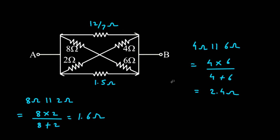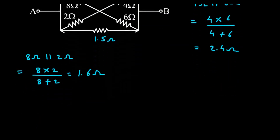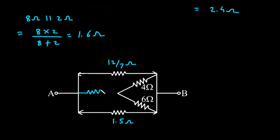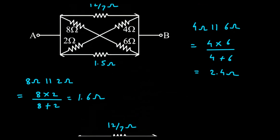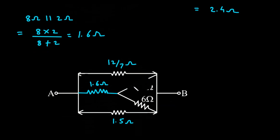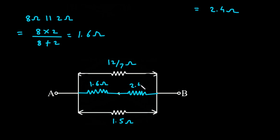Now, we can copy this circuit and replace 8 Ohm parallel with 2 Ohm with a single resistance of 1.6 Ohm, and 4 Ohm parallel with 6 Ohm replaced by 2.4 Ohm.